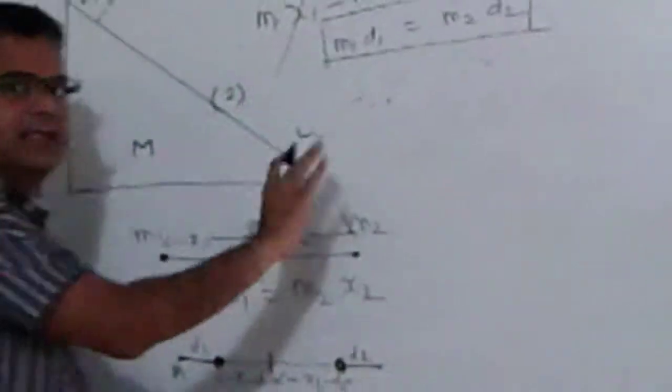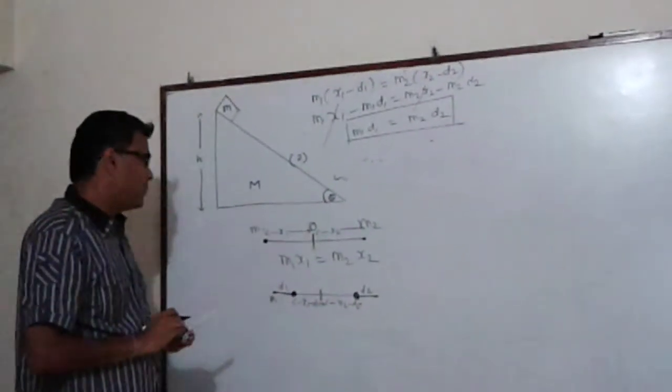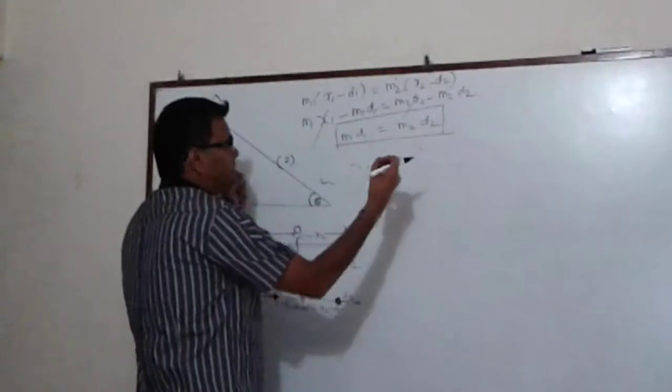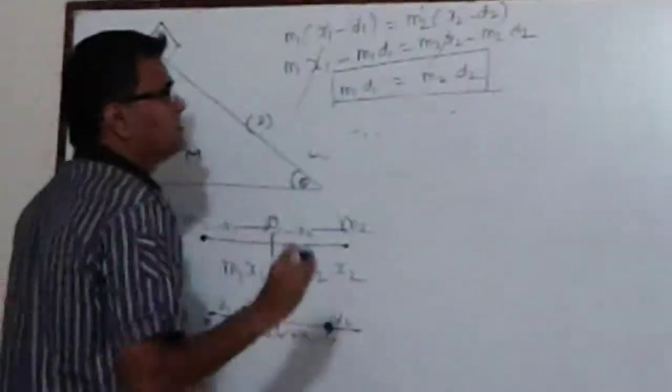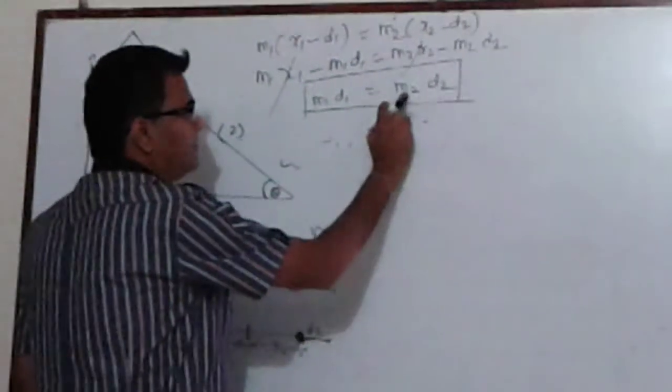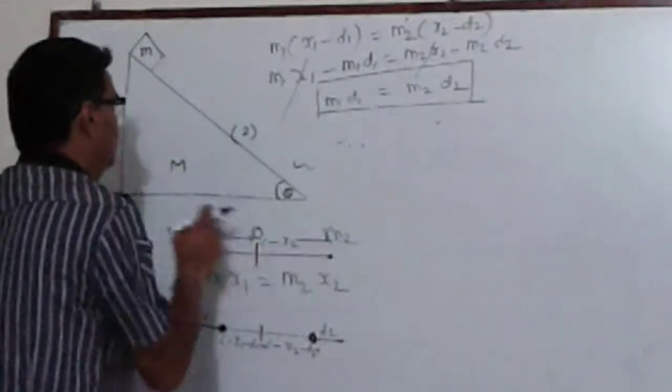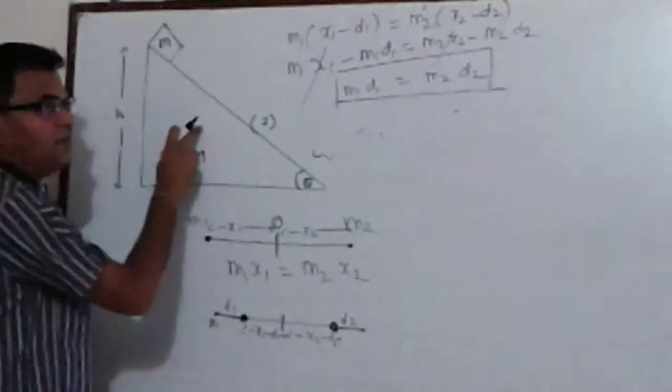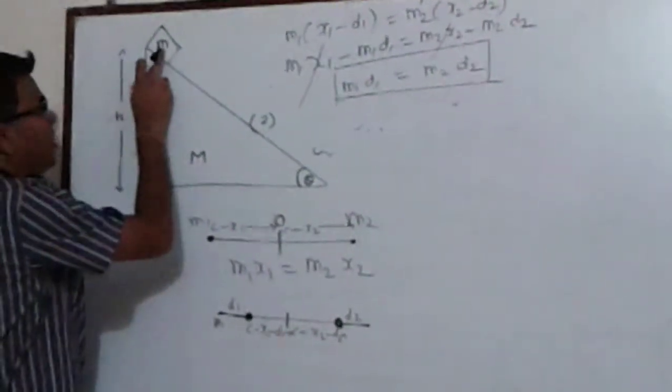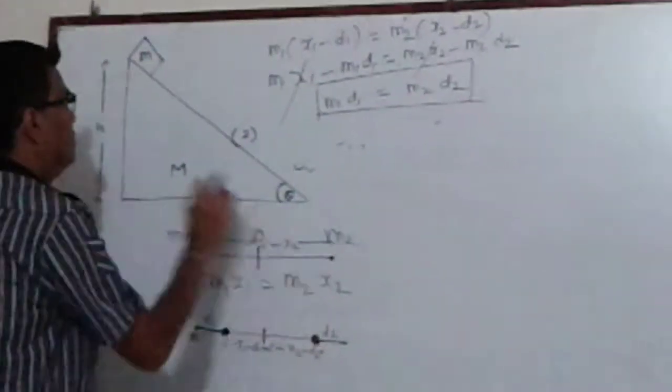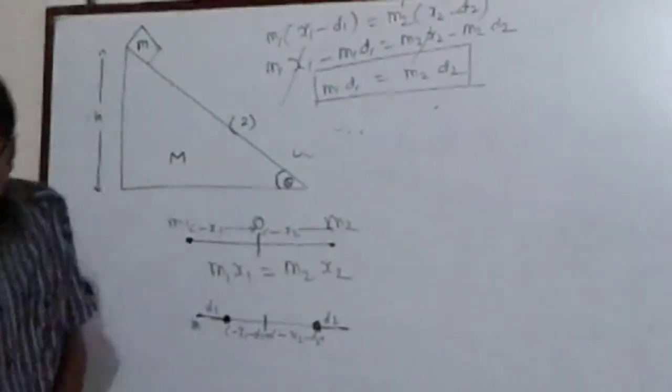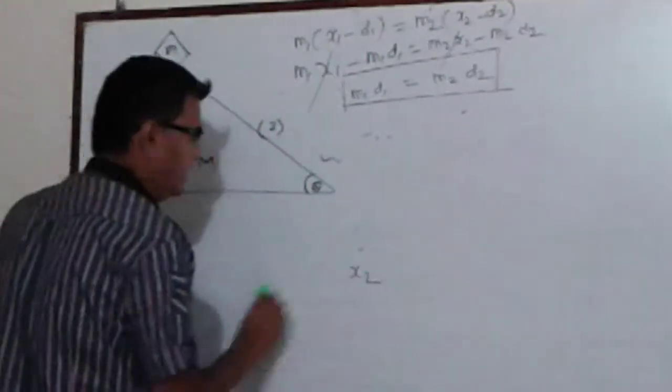This can be taken as a separate example. If two particles are moving towards each other under their mutual action of forces and there is no external force acting, then the distance moved by the first block times M1 must be equal to distance moved by the second block times M2. Let us apply this principle in this case and try to find the distance moved by the wedge when the block covers the distance. We are interested only in the horizontal distance because there is no external force acting here.